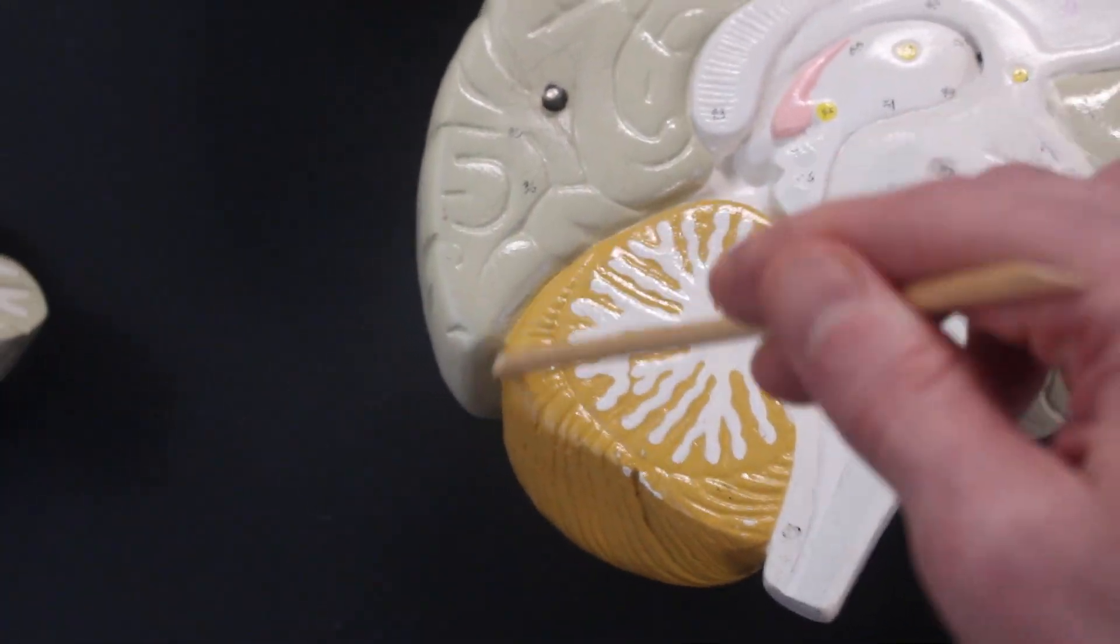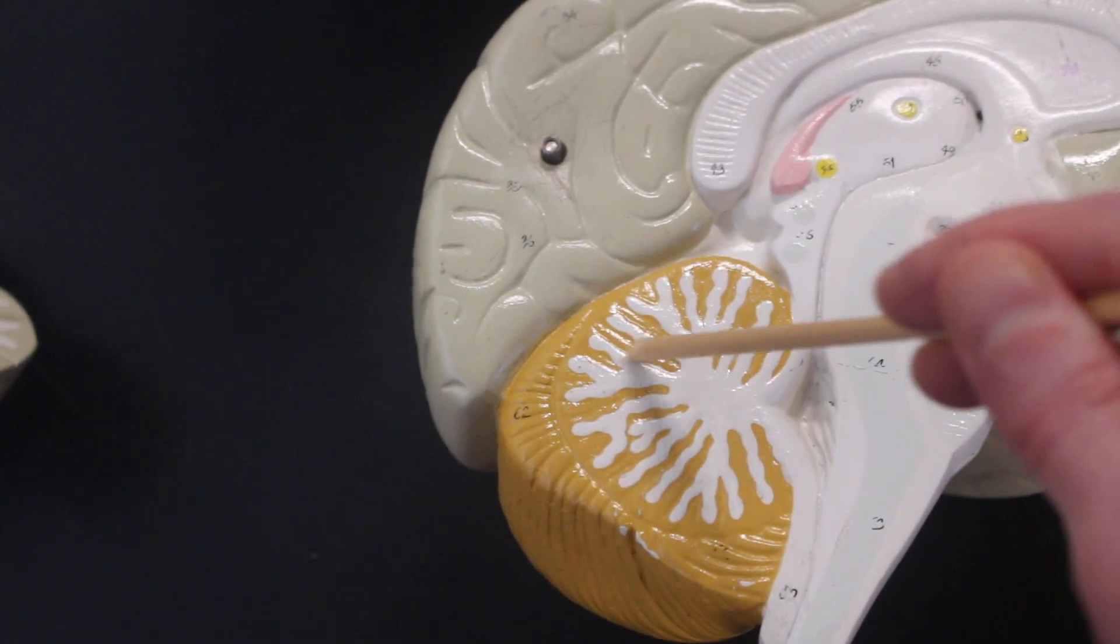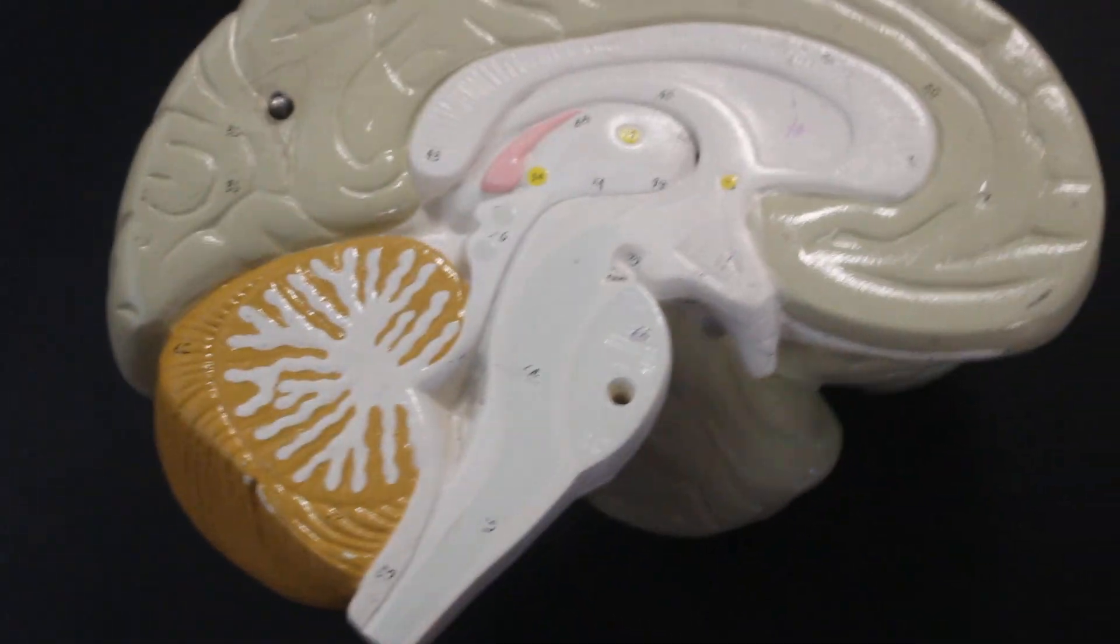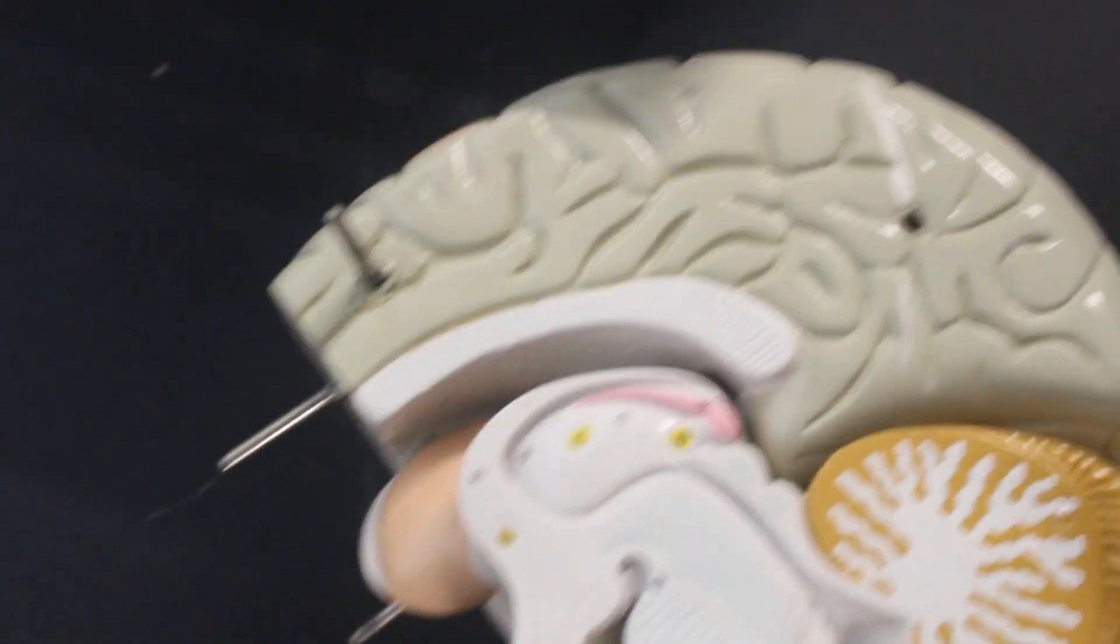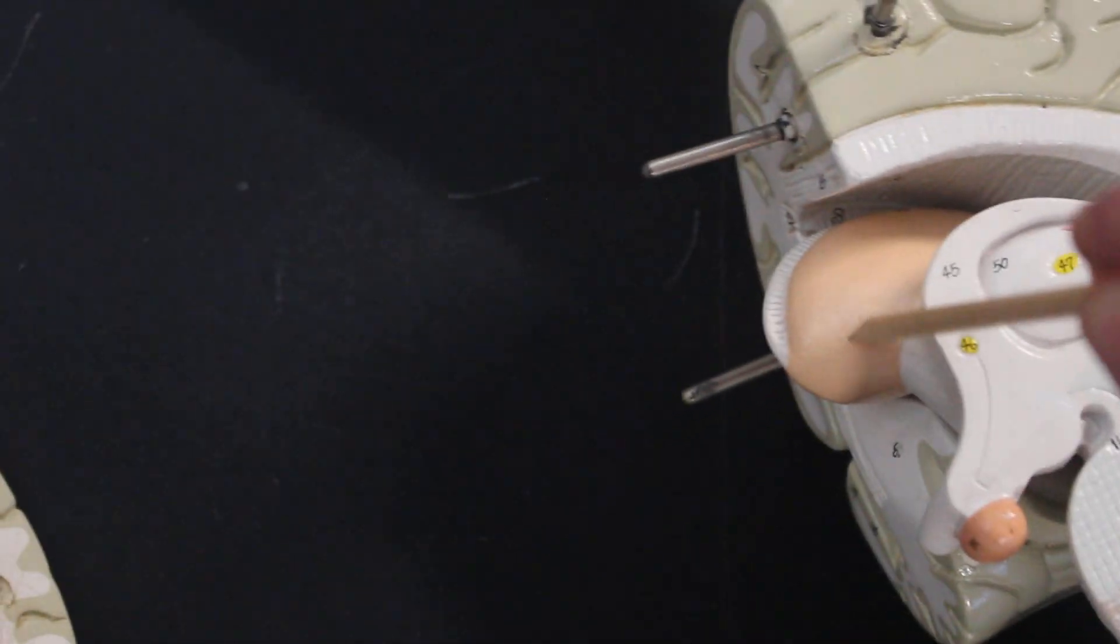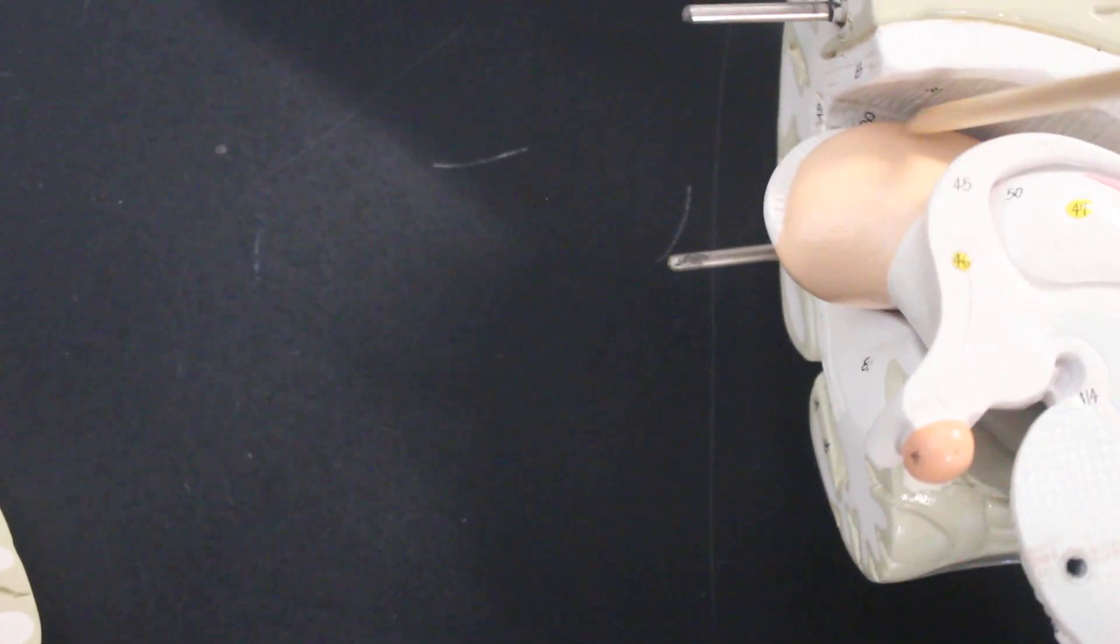This again is the cerebellum. The little white tissue within it is called the arbor vitae. Then we have spaces within the brain. So behind septum pellucidum is this space here, which is the lateral ventricle. You can also see this lump of brain matter here. That's the caudate nucleus.